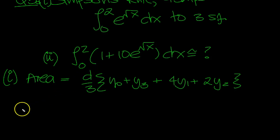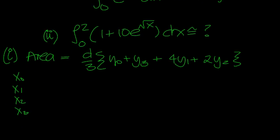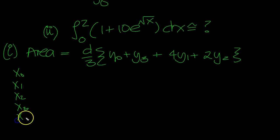Four strips between 0 and 2. So x0, x1, x2, x3, and x4. That's 1, 2, 3, 4 strips. So this would be y4, wouldn't it?